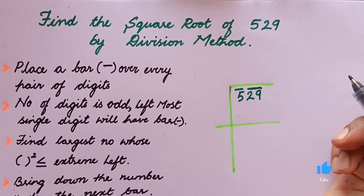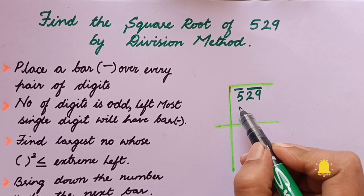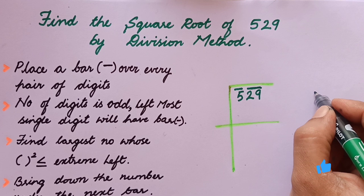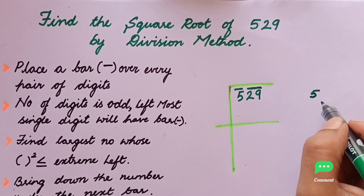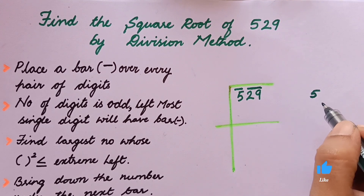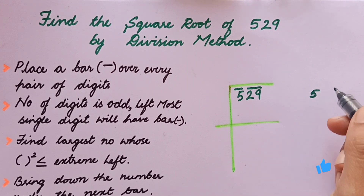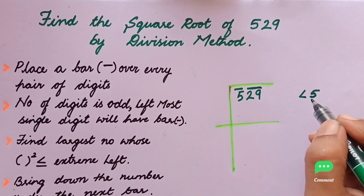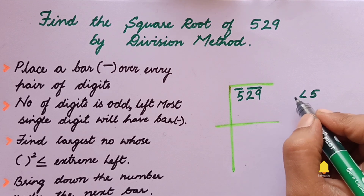Now the second step is to find the largest number whose square is less than or equal to the extreme left number. The extreme left number here is 5. The perfect square less than or equal to 5 is 4, and the condition applies here since 4 is less than 5.